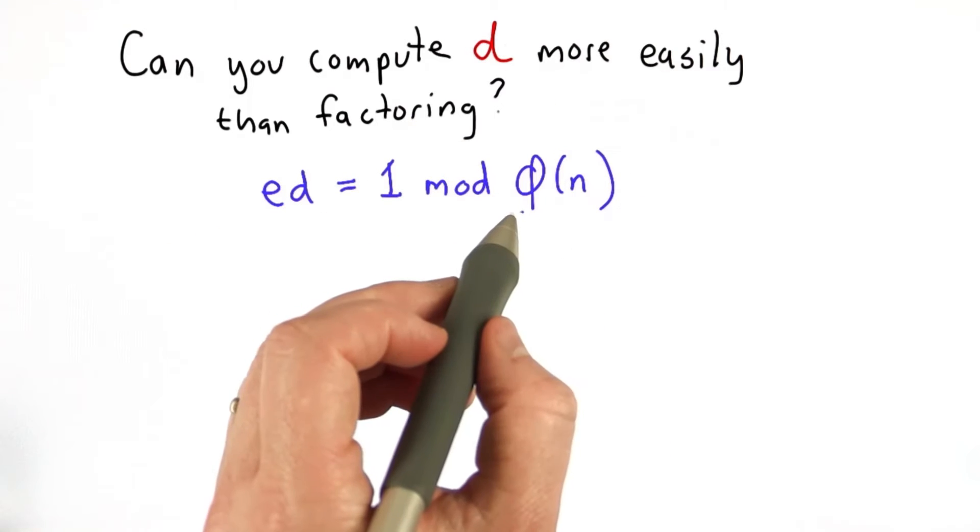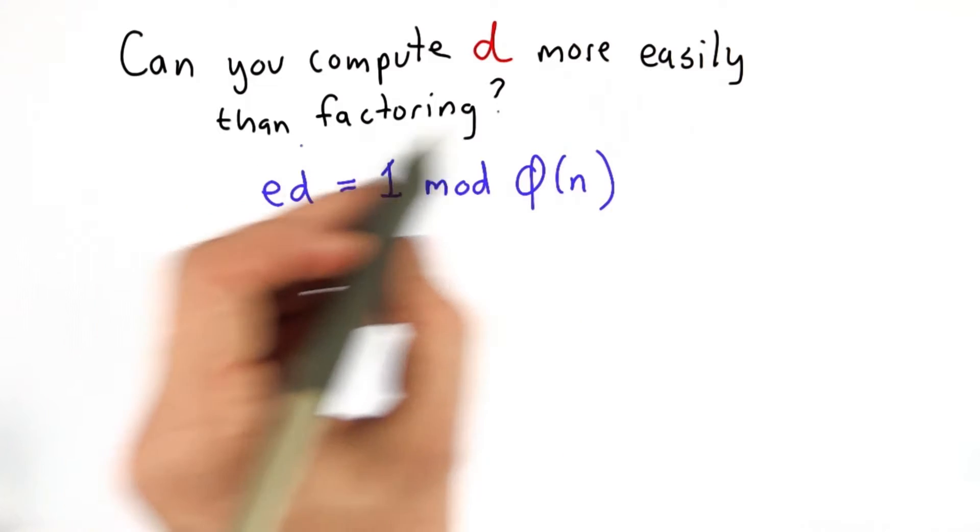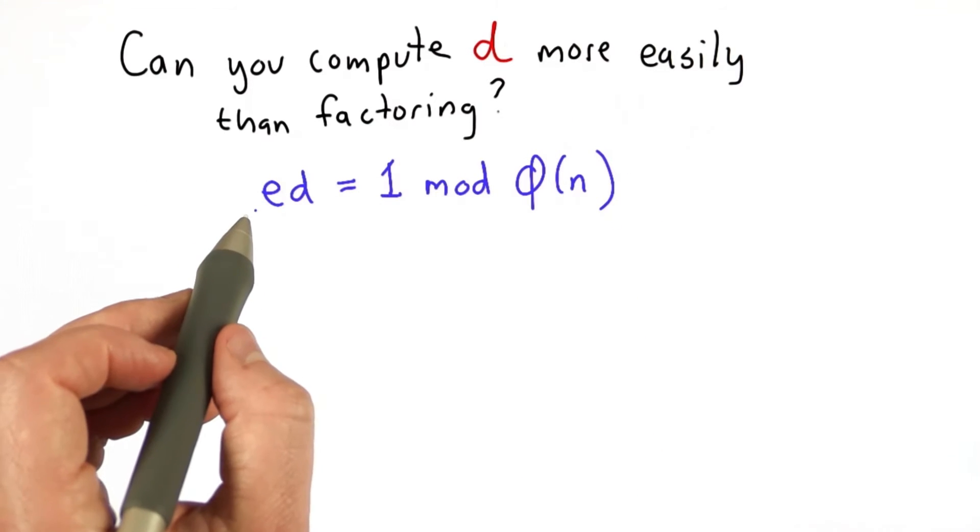This follows from what we just showed, that if we know the totient, we could easily find the factors, because the correctness of RSA depends on this property.